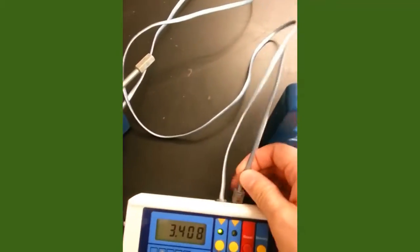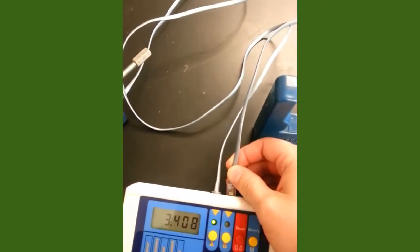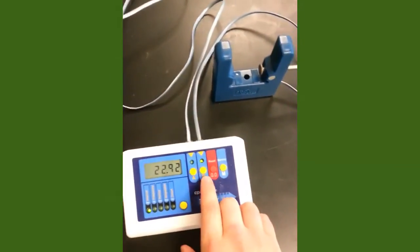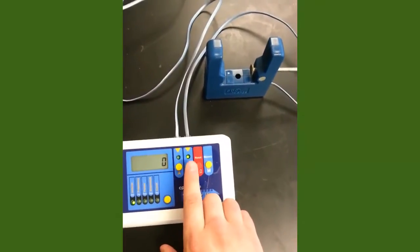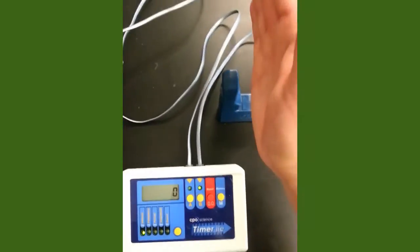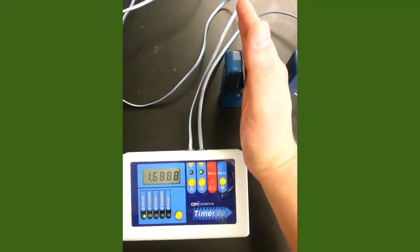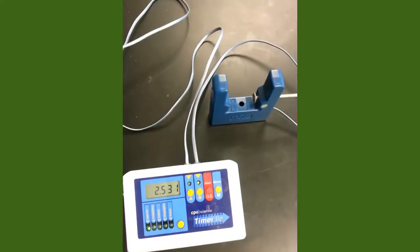Now if I plug in photogate B and I switch our lights over to B right in here, hit reset. Now if I put my hand in photogate B, it starts the timer and I take my hand out, it stops the timer.